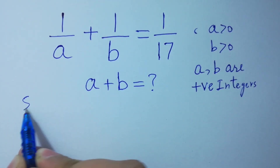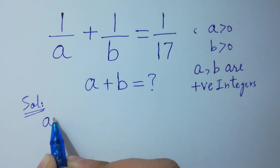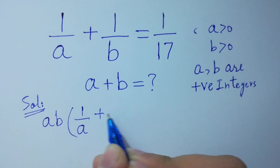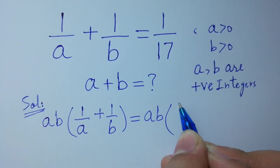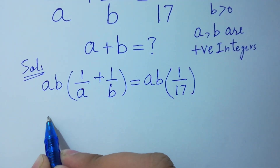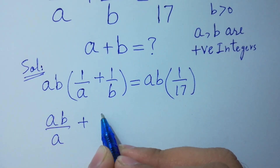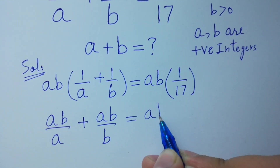To solve this, first of all we multiply on both sides by ab. So ab times 1 over a plus ab times 1 over b equals ab over 17. This gives us ab over a plus ab over b equals ab over 17.